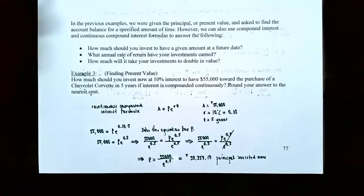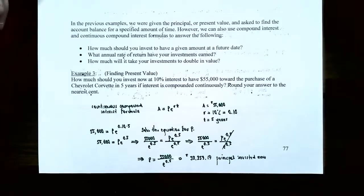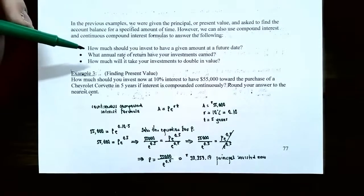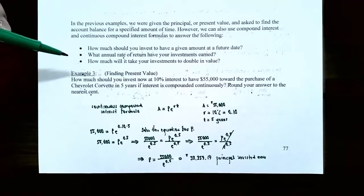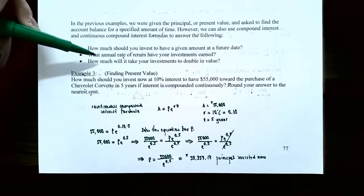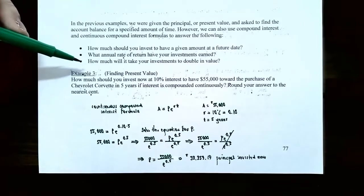In previous problems we were given the principal P and asked to find the accumulated balance A. However, using the compound or continuous compound interest formulas, you can also solve for P — how much to invest now to reach a future value — for R — what annual rate of return your investments earned — or for T — how long it takes for your investment to double or reach a target amount.